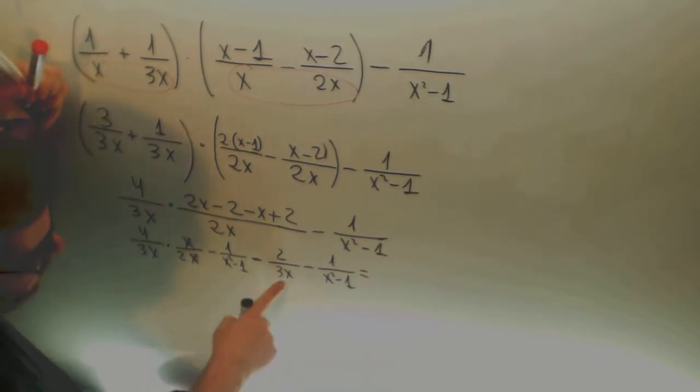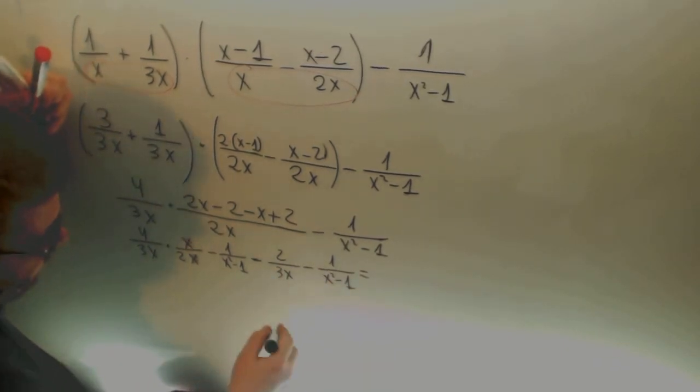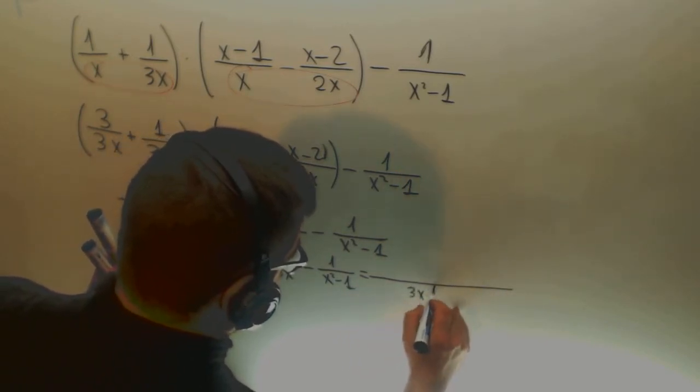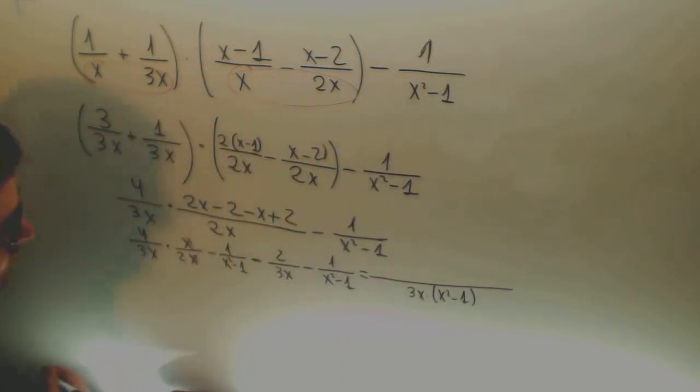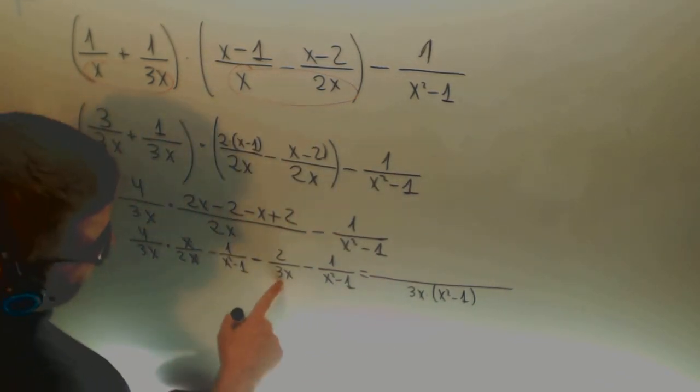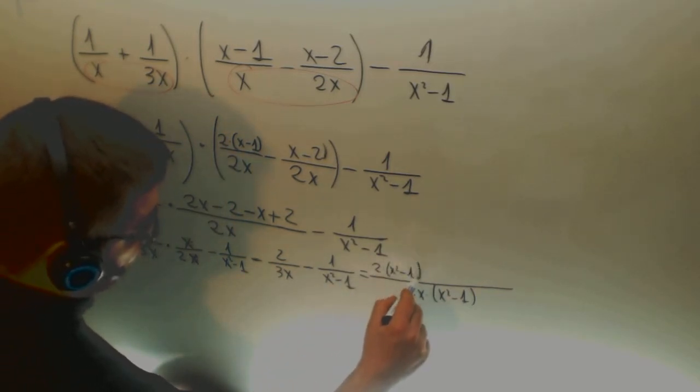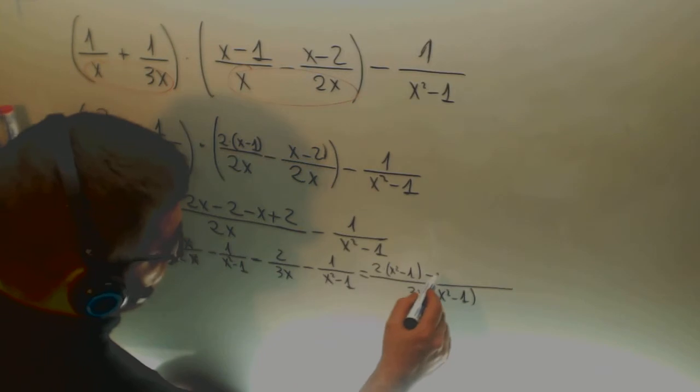And the minimum common multiple between this and this is the both of them, multiply. And then here I have to put the x squared minus 1. And here I have to put the x. And here I have to put the 3x.